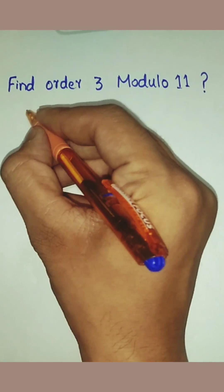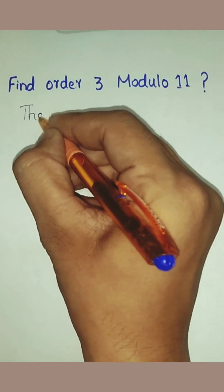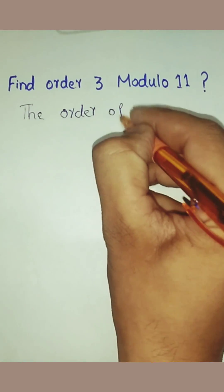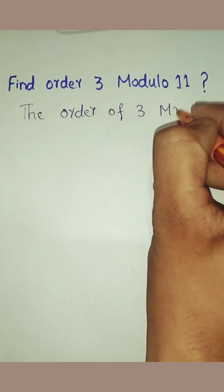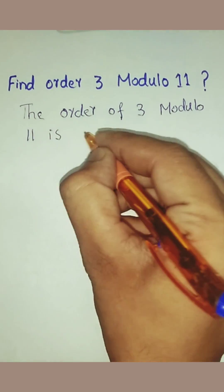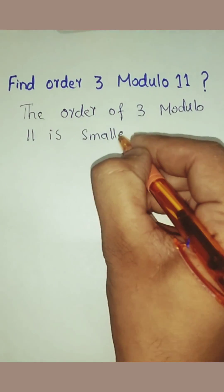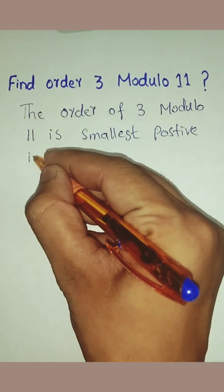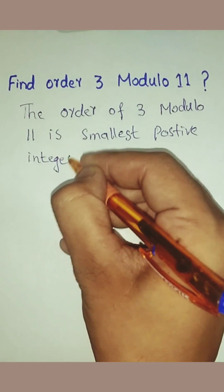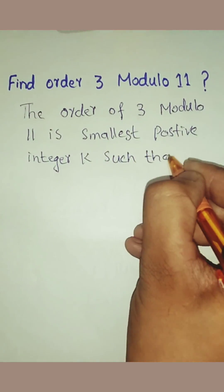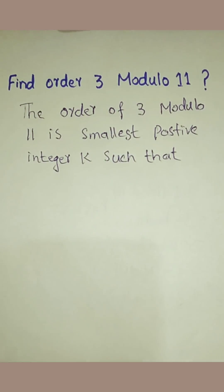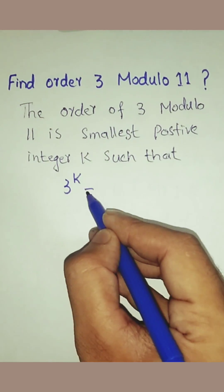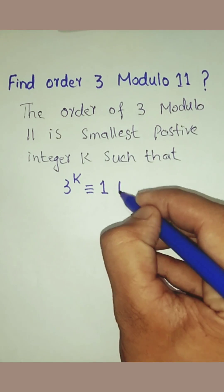Find the order of 3 modulo 11. The order of 3 modulo 11 is the smallest positive integer k such that 3 to the power k is equal to 1 mod 11. What is k? k is equal to 1, 2, 3, and so on.